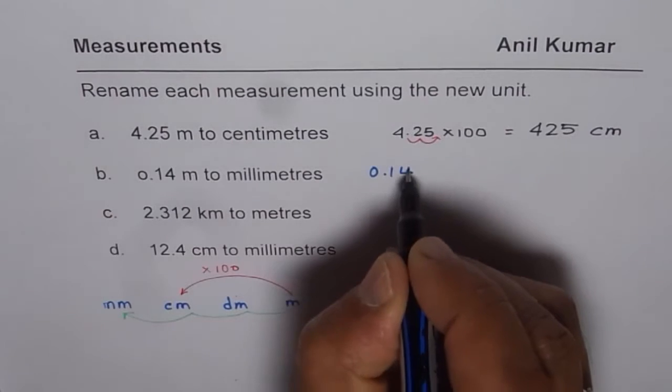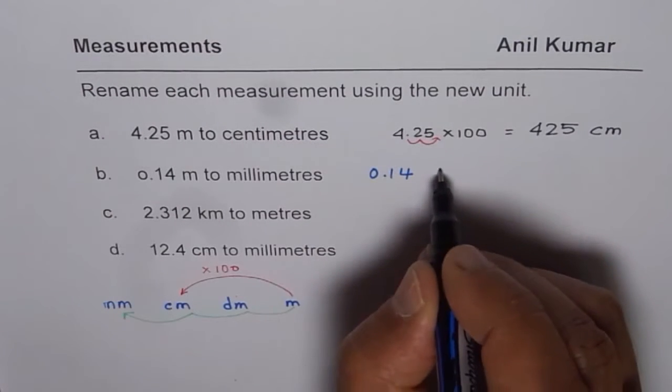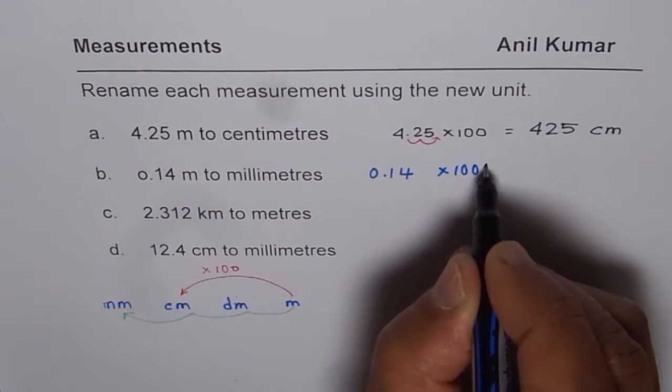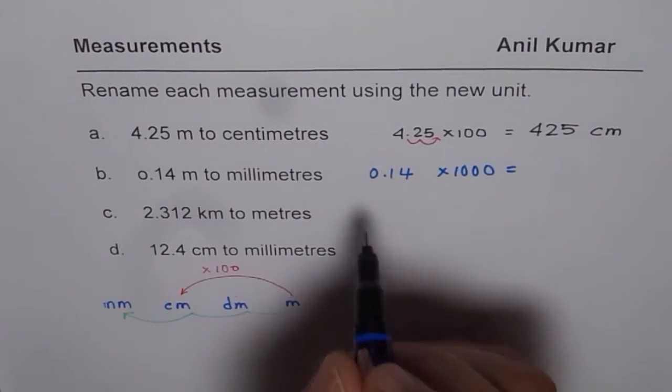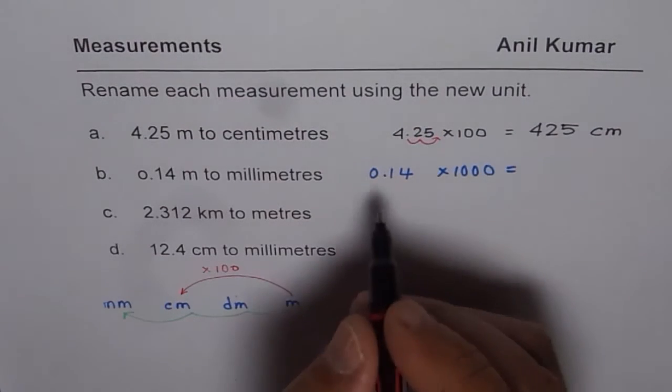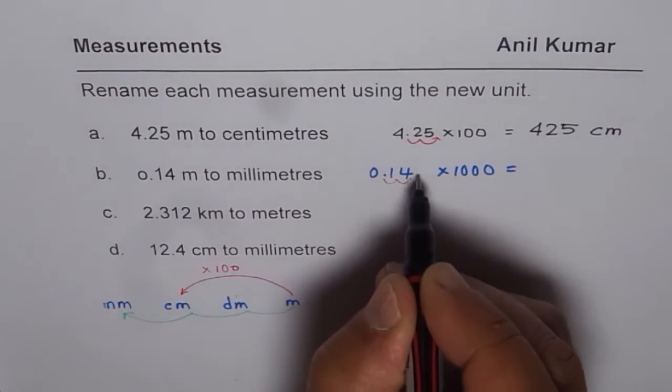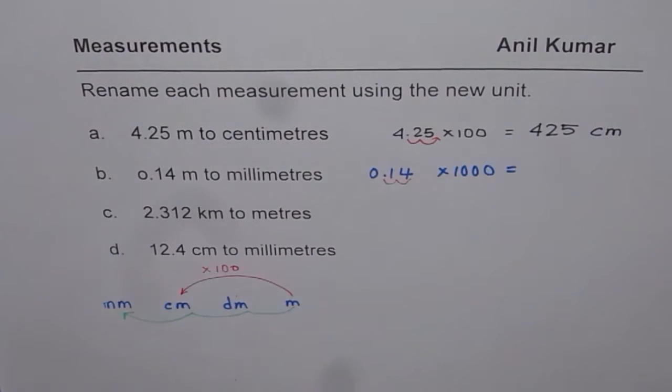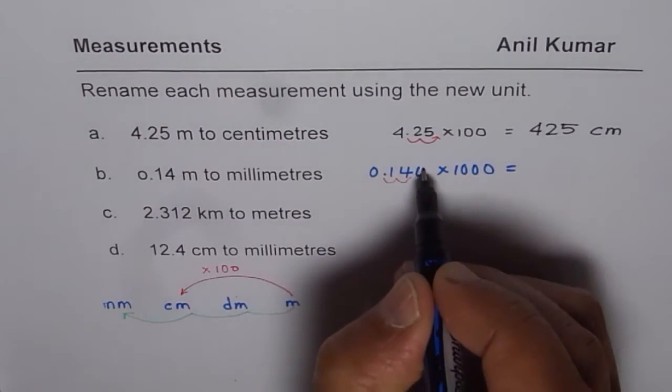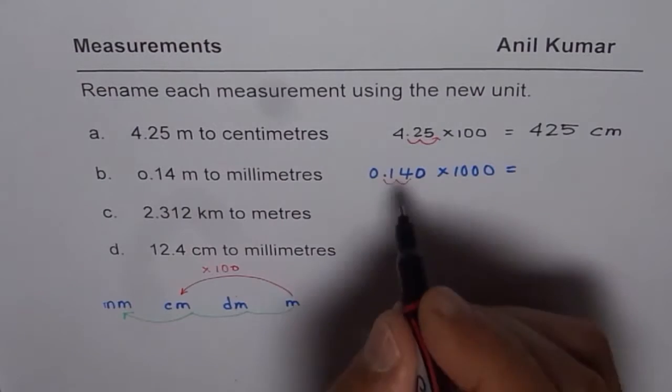So we have 0.14 times 1000. Now decimal moves 3 positions. 1, 2, 1 more. So what we can do here is, we can think about a 0 here. So that will be the result.